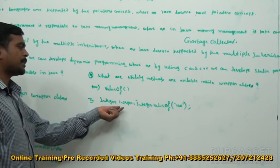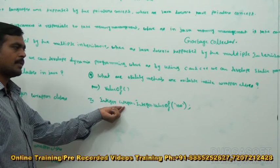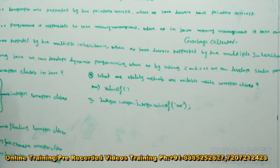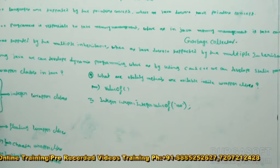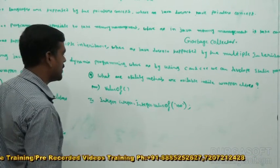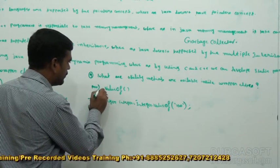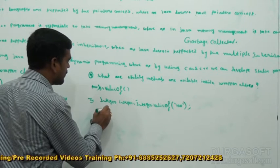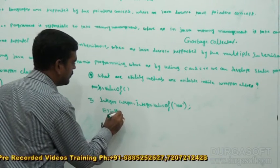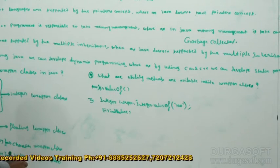Now this 100 is going to be stored inside this Integer. If we want to get the primitive value, how to get the primitive value? One more method is there — that is `intValue`. These are all utility methods.